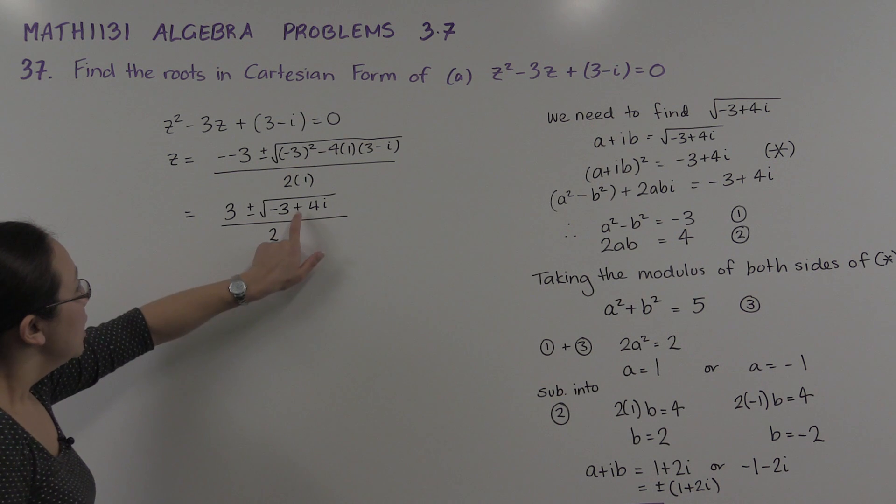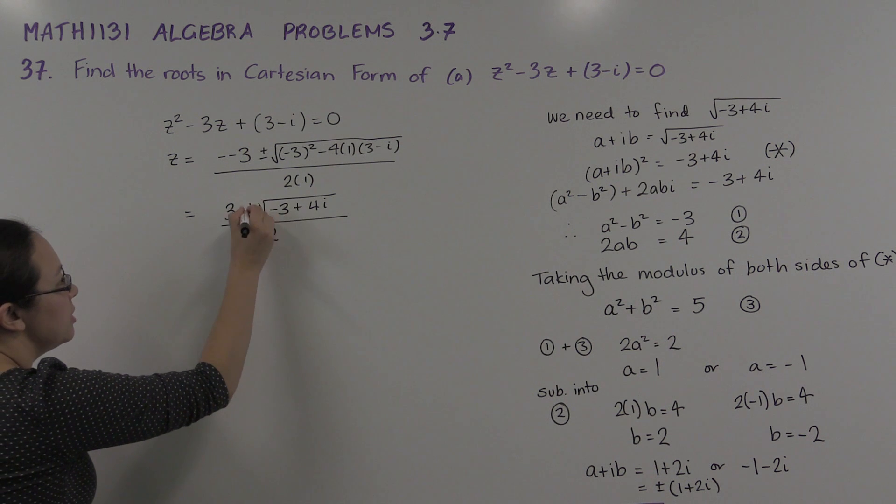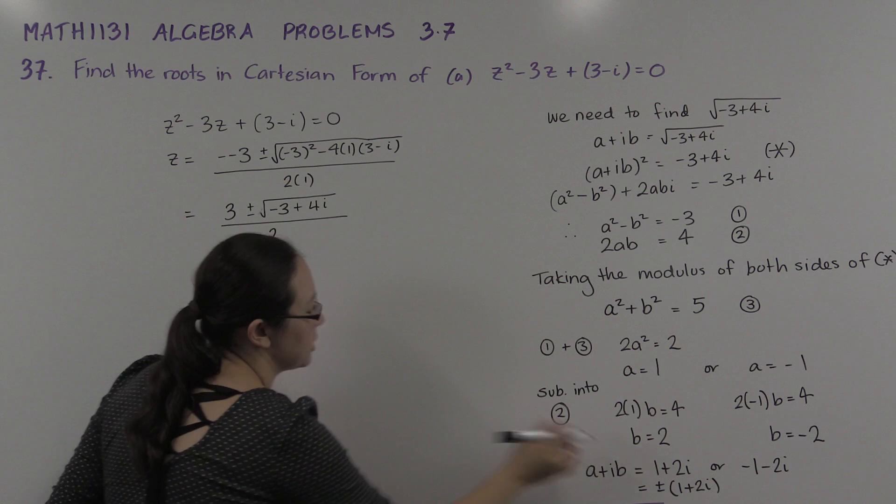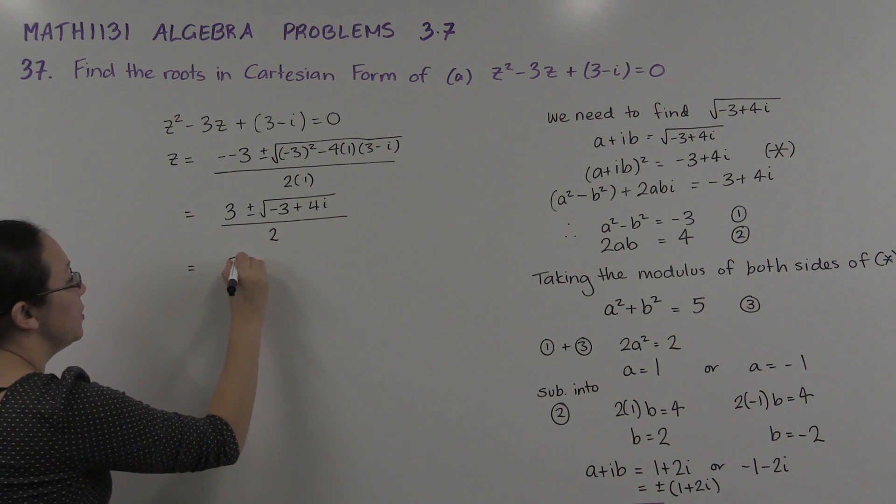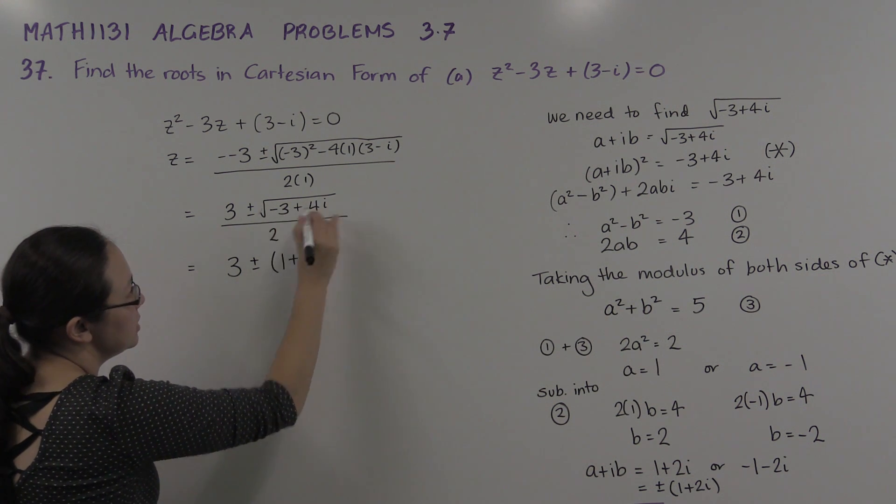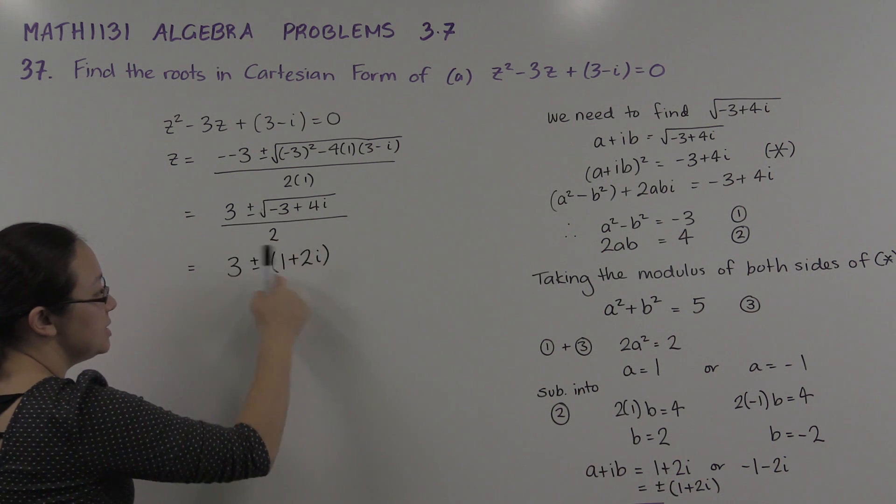So I know what this is in terms of a + ib. Notice that we don't really need the plus minus from the quadratic formula because we've got our plus minus there. So we simply have (3 ± √(-3 + 4i))/2. These are these, they're our options.